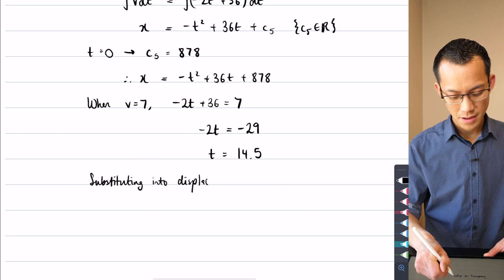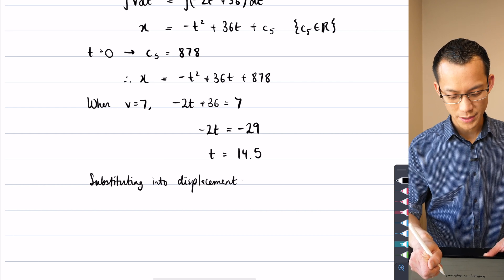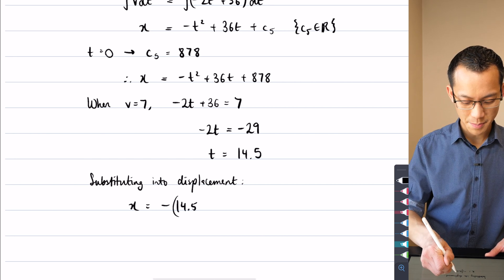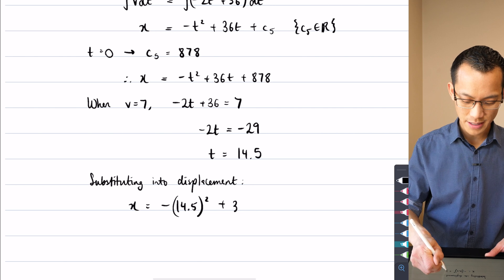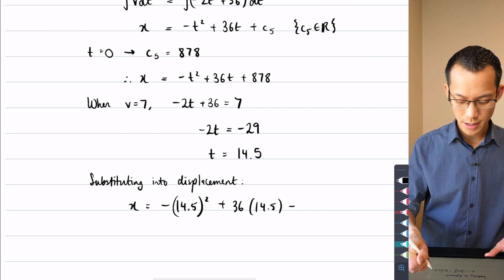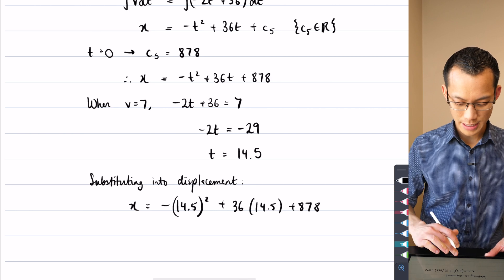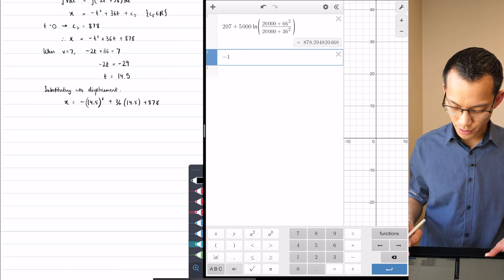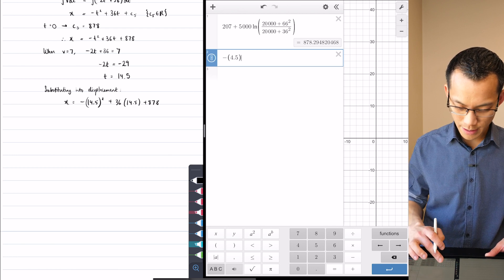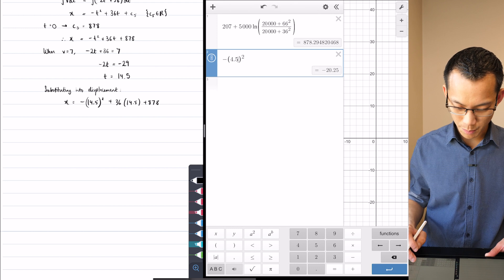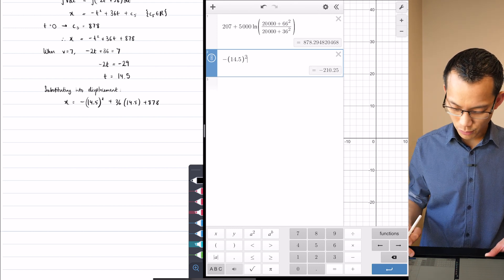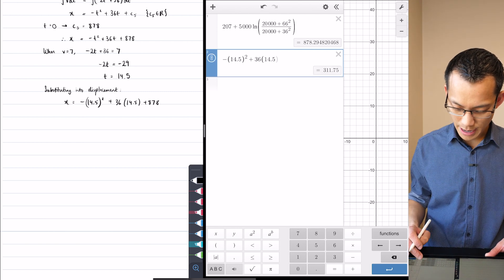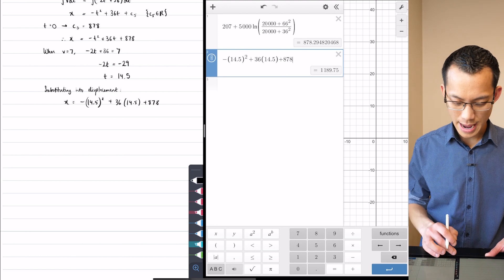What does that give me? Something awkward because 14 and a half is a gross number. X equals negative 14 and a half. That's being squared plus 36. Lots of 14 and a half plus that 878. Let's reach for that calculator again. Okay, what do we get here? So whoopsie daisy, let's put some brackets. 14.5, that's going to get squared, or would be get squared if you put the 14 in there, plus 36 lots of 14.5. And then what am I adding? 878. So what am I getting here?